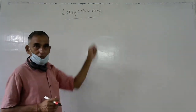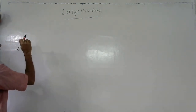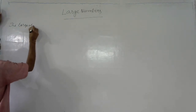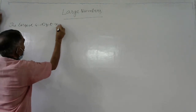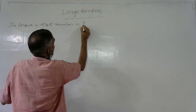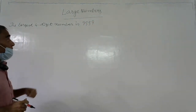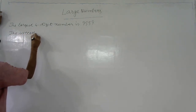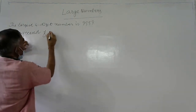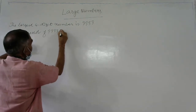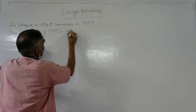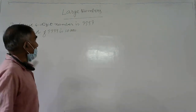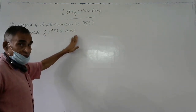We have received large numbers. In the last lesson, we learned about four-digit numbers. Now, the largest four-digit number is nine thousand nine hundred ninety-nine. The next number — the successor of nine thousand nine hundred ninety-nine — is ten thousand. Ten thousand is the smallest five-digit number.